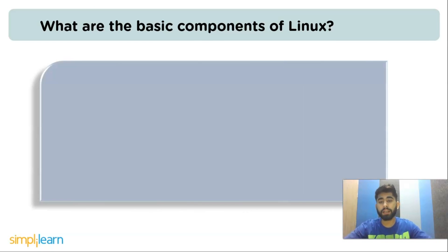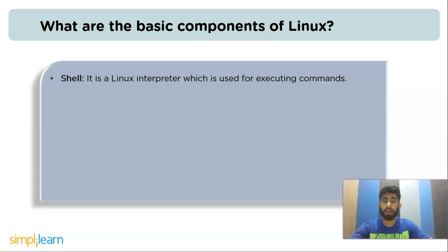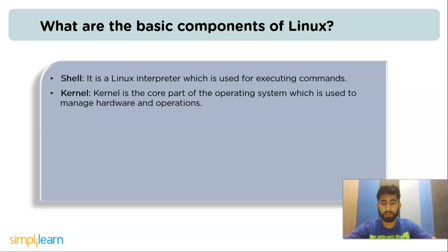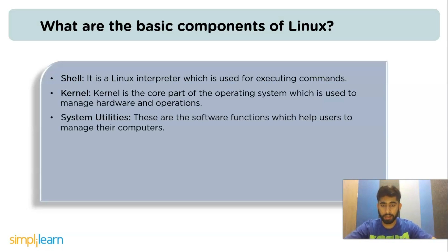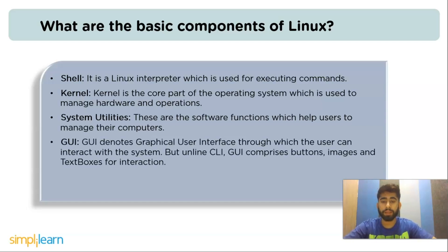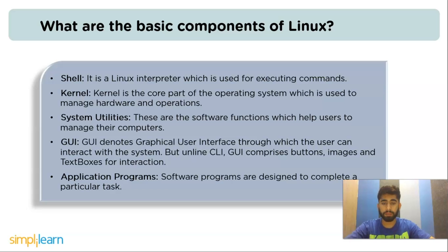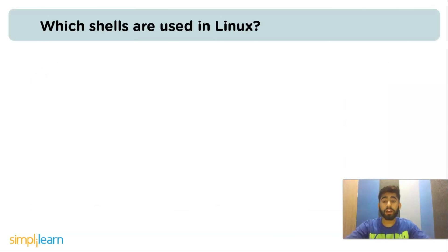The next question is: what are the basic components of Linux? The first one is the shell — it is a Linux interpreter used for executing commands. The next one is the GNU kernel, which is the core part of the operating system used to manage hardware and operations. After that, system utilities are the software functions which help users to manage their computers. The next one is GUI — Graphical User Interface — through which the user can interact with the system using buttons, images, and text boxes.